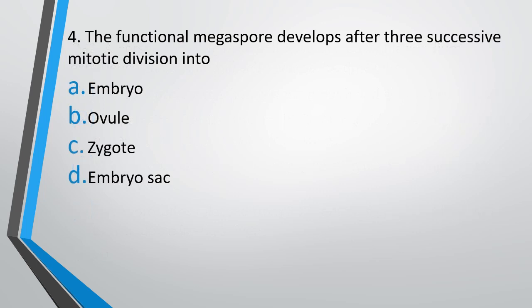Question 4. Functional megaspore develops after 3 successive divisions into: embryo, ovule, zygote, or embryo sac. The correct answer is option D — embryo sac.